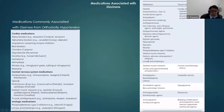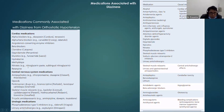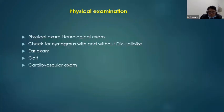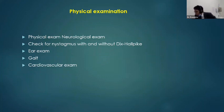Medications to ask about: cardiac medications, some medications cause postural hypotension — for example, beta-blockers, ACE inhibitors, nitrates, Parkinson's medications, anti-epileptic medication, urology medication, and alcohol. Of course, alcohol makes you dizzy. For physical examination, you have to do a neurological examination including at least cranial nerve examination and gait, and also nystagmus with or without the Hallpike maneuver.